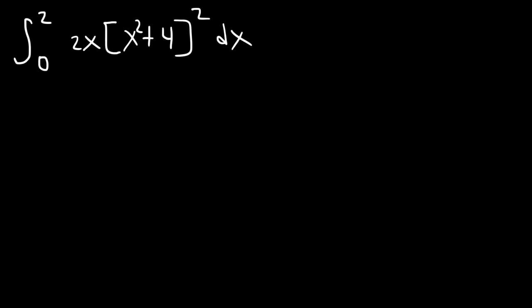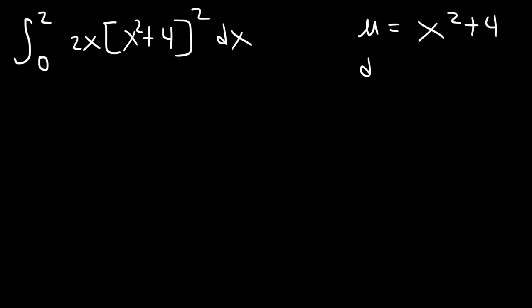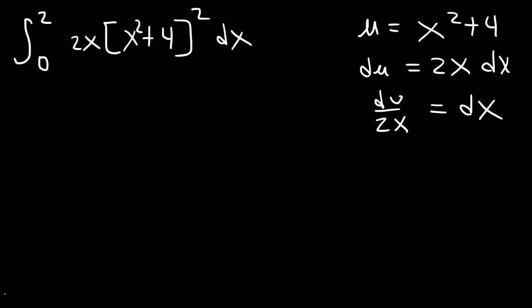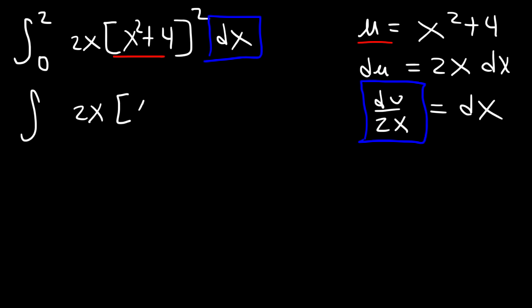First we need to integrate the function using u substitution. We're going to make u equal to x squared plus 4, so that du is 2x dx, which cancels the 2x in the front. So we divide both sides by 2x to isolate dx. We replace x squared plus 4 with u and replace dx with du over 2x, giving us u to the second power times du over 2x.